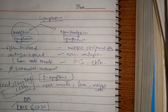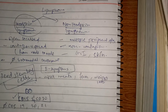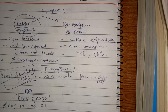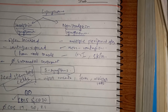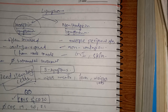Hodgkin lymphoma is less common than non-Hodgkin lymphoma, comprising about 40% of all lymphomas. Risk factors include HIV infection, association with Epstein-Barr virus, and defects in cell-mediated immunity.